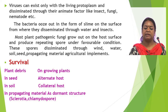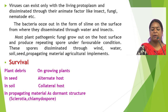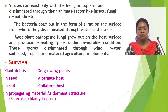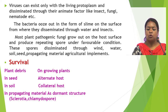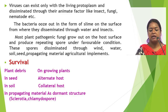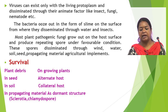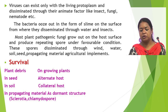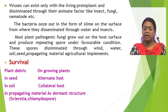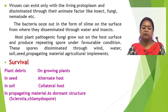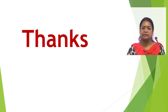After dissemination, these pathogens survive on plant debris, on growing plants, in seeds, in soils, in propagating materials, on alternate and collateral hosts, and in the form of dormant structures like sclerotia and chlamydospores. These are all the events about pathogenesis. Thank you.